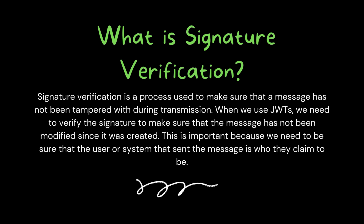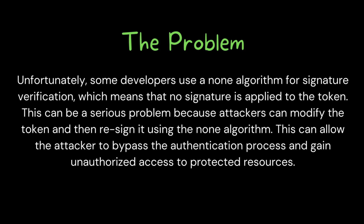The next thing to know is signature verification, and that's what the server side does. When we use JWT, we need to verify the signature to make sure that the message has not been modified since it was created. This is important because we need to be sure that the user or system that sent the message is who they claim to be. But some developers use a none algorithm for signature verification, which means no signature is applied to the token. This can be a serious problem because attackers can modify the token and re-sign it using the none algorithm, allowing them to bypass authentication and gain unauthorized access.